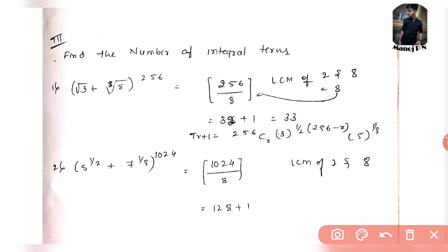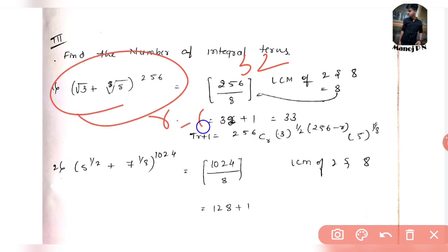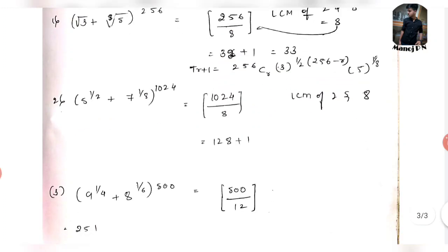Next trick: Find the number of integral terms in a binomial expansion. For example, with (√3 + ⁸√5)^256, take the roots — denominators 2 and 8 — and find their LCM, which is 8. Divide 256 by 8 to get 32, then add 1. The answer is 33. This method works when both base numbers are prime.